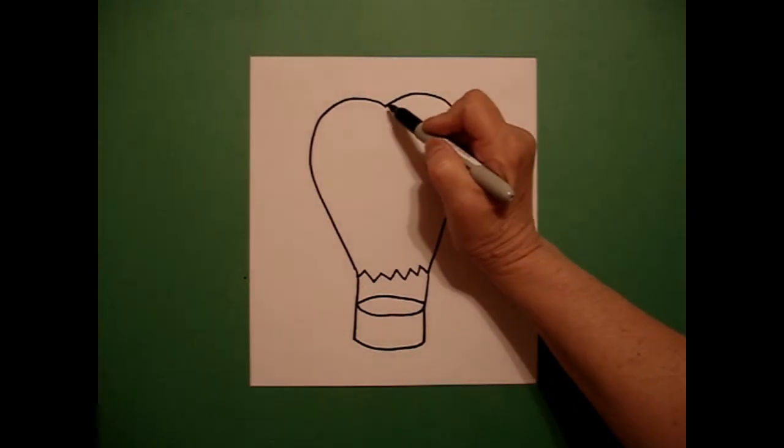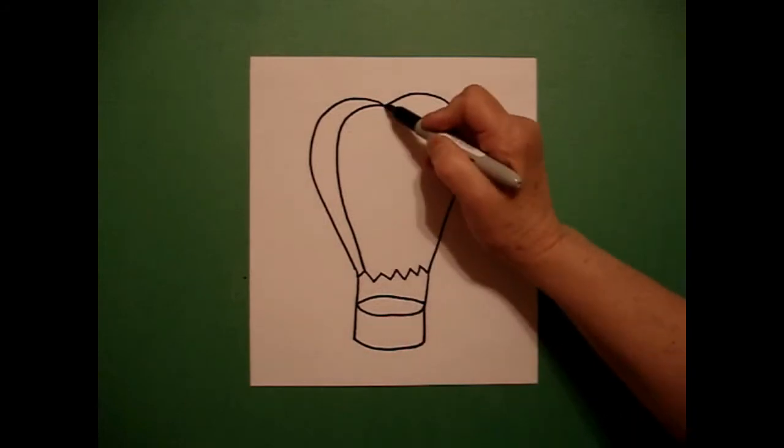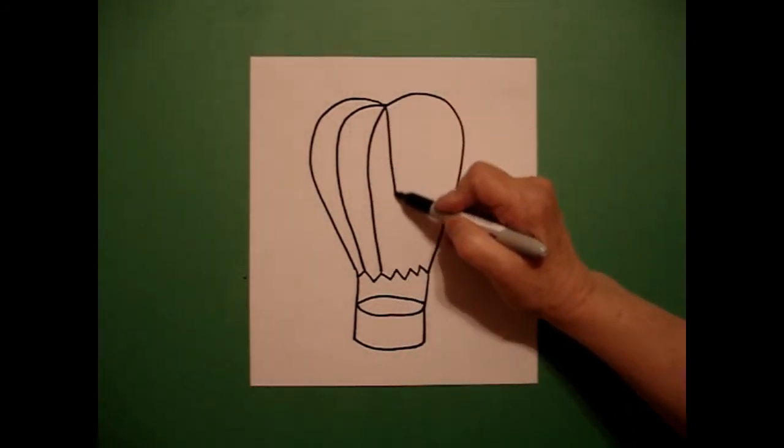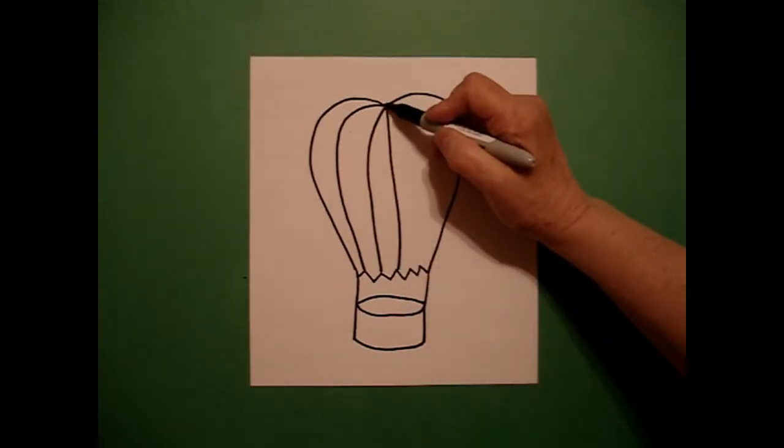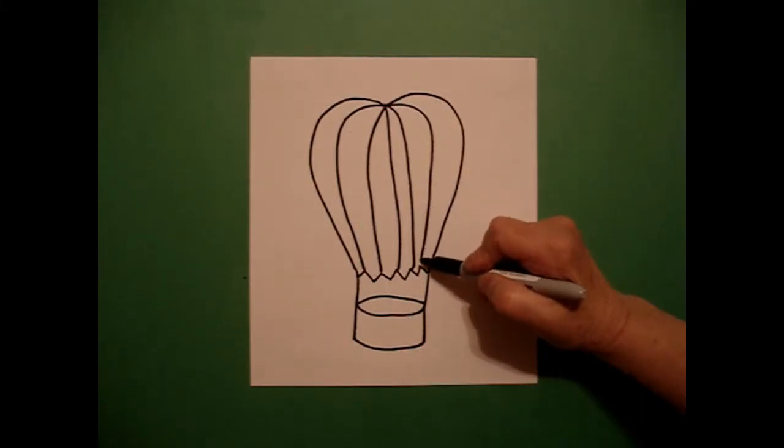I come back to my dot way at the top and I'm going to draw curved lines down to the zigzags I've already drawn to divide up the space. Keep going, keep going.